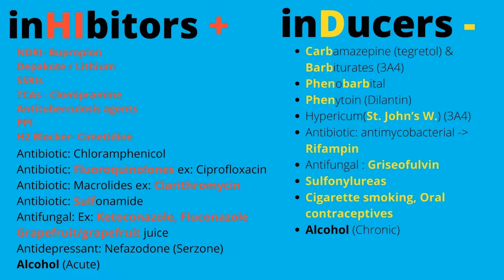Note that clomipramine is a TCA, and TCAs in general — not just that specific one — are inhibitors, so I use the category TCA to help remember that. Anti-tuberculosis agents such as isoniazid and rifampin are also in this category. Prilosec, a PPI (proton pump inhibitor), is an inhibitor. Cimetidine is an H2 blocker — so H2 blockers and PPIs are all inhibitors. A lot of antibiotics are also listed as inhibitors.